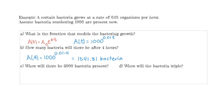In question C, we have a slightly different type of question. Instead of asking how many, it's asking when — when will there be 5000 bacteria present? What we're given is the output, so we set 5000 equal to the function and solve for T. When the amount after T hours is 5000, what is that T value?